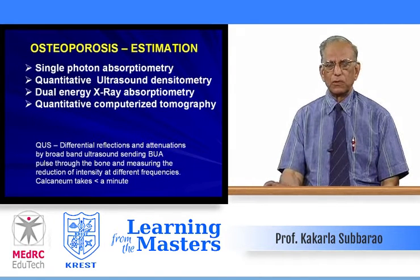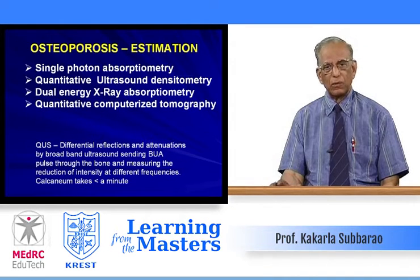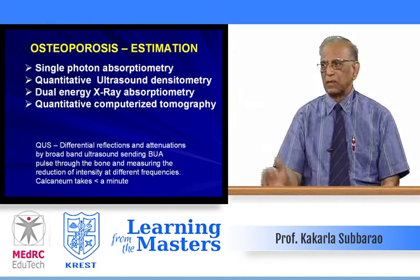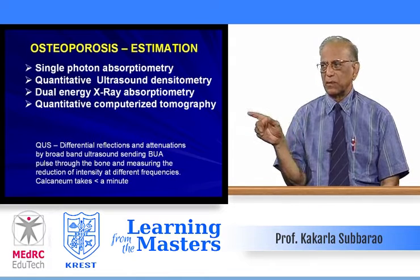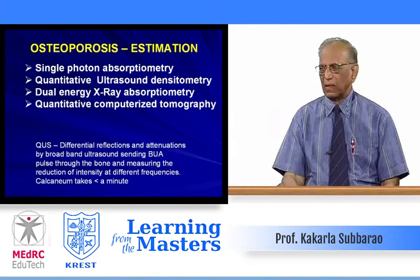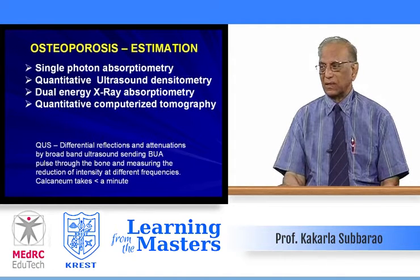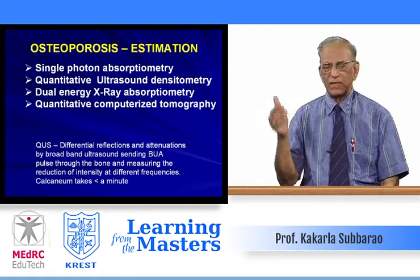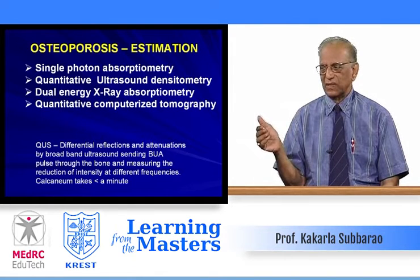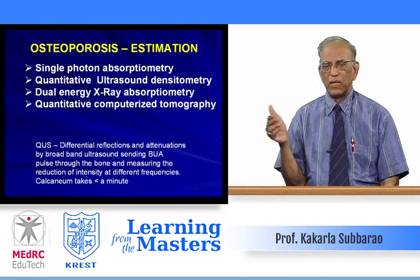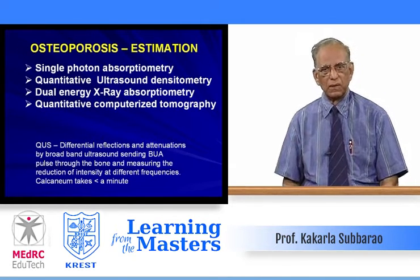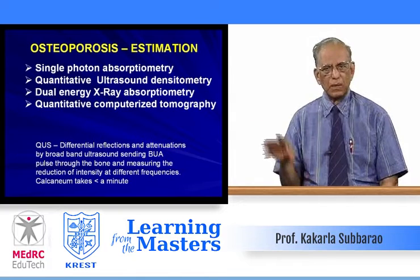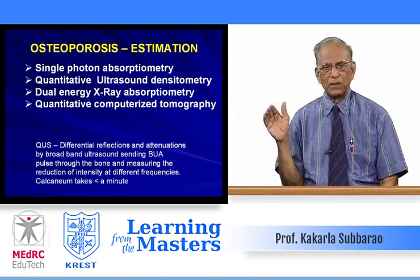To estimate osteoporosis for diagnosis and monitoring after therapy, dual energy X-ray absorptiometry (DXA) is popular. Quantification by ultrasound is also done — measuring differential reflections and attenuation by broadband ultrasound sending a pulse through the bone at different frequencies. The calcaneum is the preferred site and takes only about a minute to perform. Quantitative ultrasonography can be done.